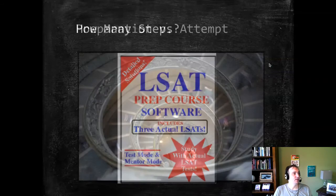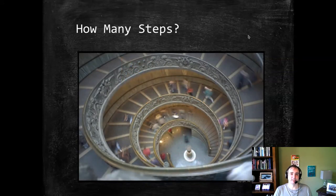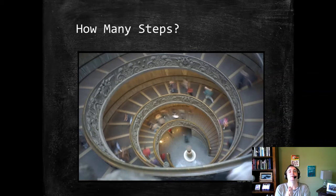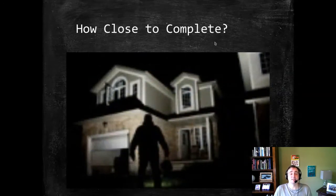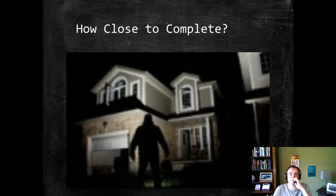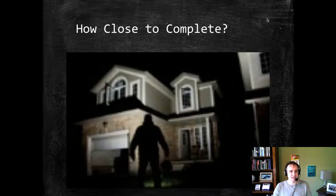There are two general ways to think about this problem. One is a backward-looking test: we pick a moment in time and ask what steps you've already taken — at some point, an accumulation of steps creates an attempt. The other is a forward-looking test: what do you have left to do? Not what you've done, but how close you are. Imagine someone just outside a home carrying a burglar's toolkit — it's not about what they've done but that the crime is minutes away. These are two conceptual approaches, and this is basically the difference between the MPC and common law.